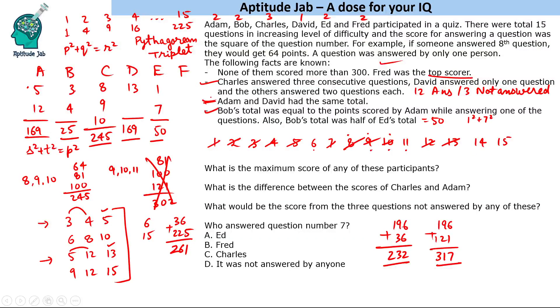If you take 14 and 11, that gives 196 + 121 = 317, which is more than 300. So all other combinations are not possible. The only possibility is 6 and 15, so Fred answered 6 and 15 and got 261.